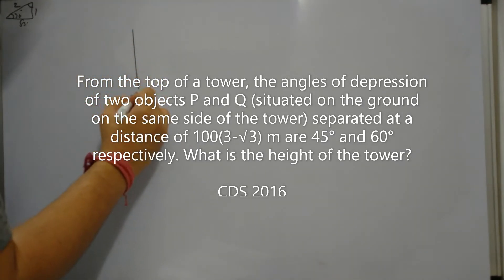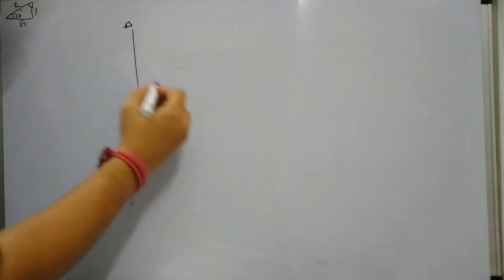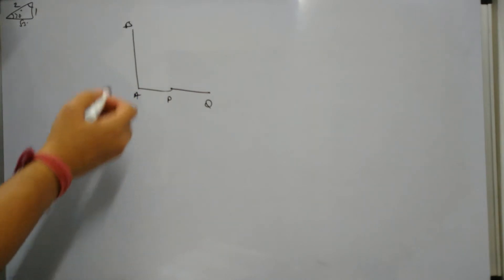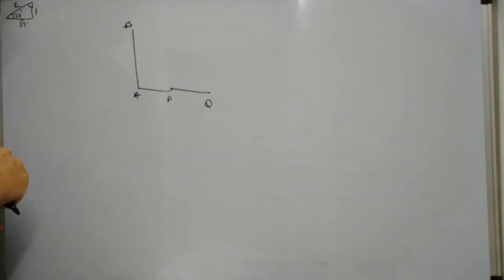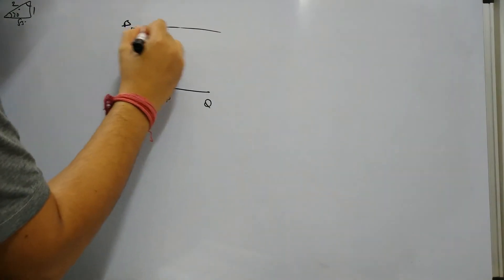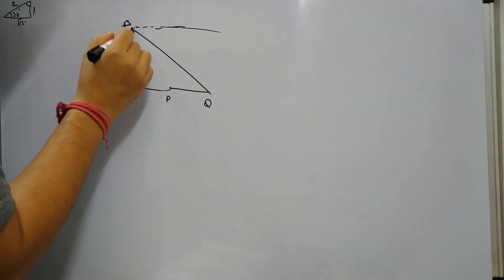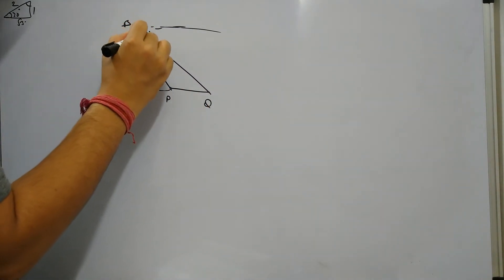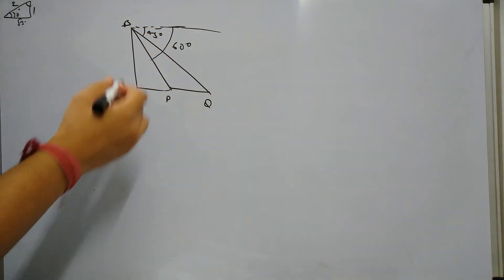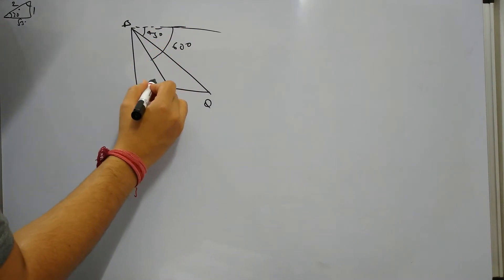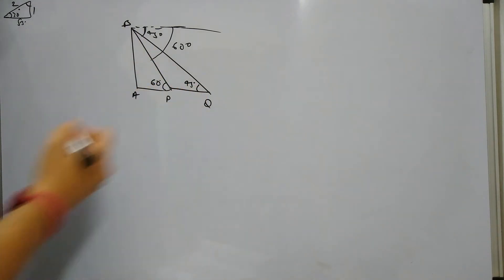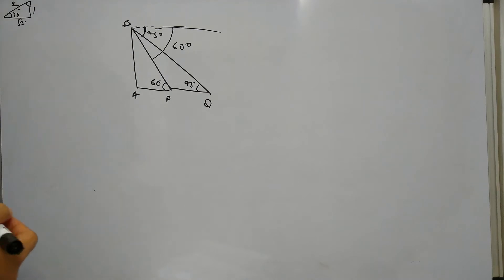We have a tower AB and there are two points P and Q. The angle of depression of these two points from the top of the tower — this angle is 45 degrees and this angle is 60 degrees. So if this angle is 60 degrees then this angle will also become 60 degrees, and if this angle is 45 degrees then this one also becomes 45 degrees, because these lines are parallel.